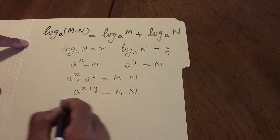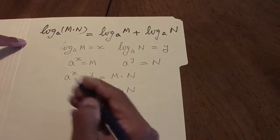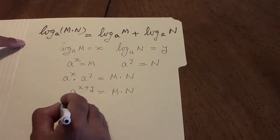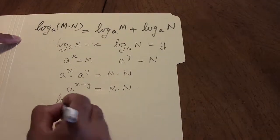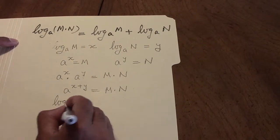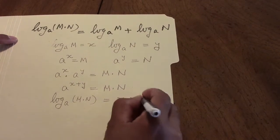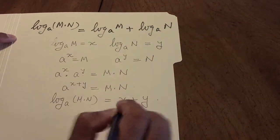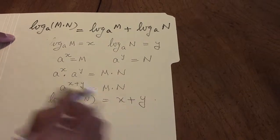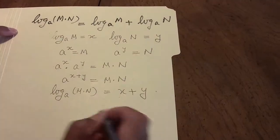Now we have an exponential which can be written as a logarithm, so log to the base a of m times n equals x plus y. And once we have this relationship, we put x and y back into it.